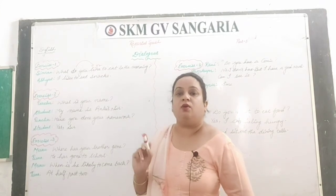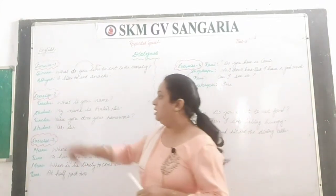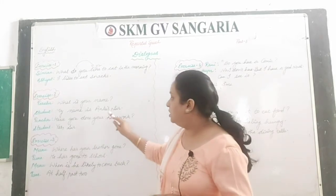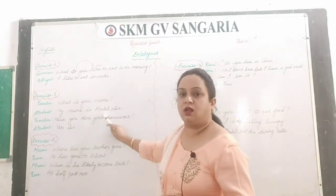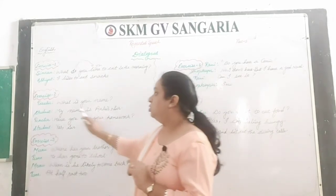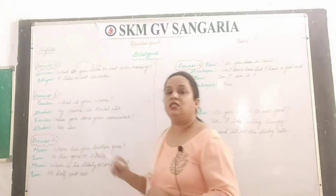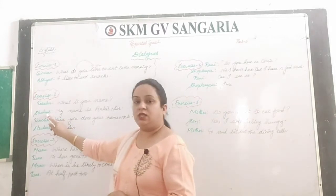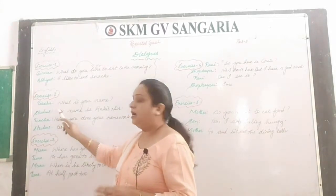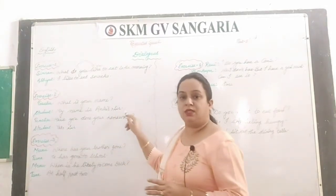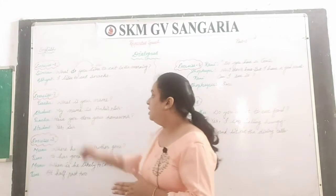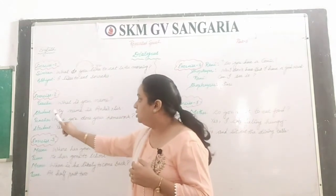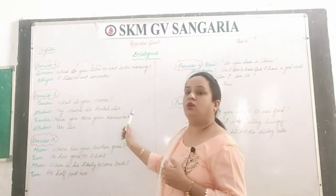Here teacher and student are given, but since the name Ankit is provided, you use 'his'. So: The teacher asked the student what his name was. Full stop. Then the student is replying, which is a simple sentence. So: The student replied that his name was Ankit.